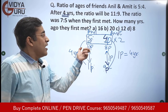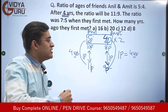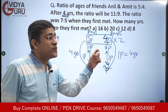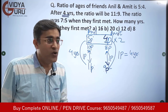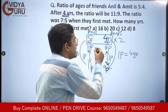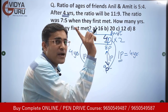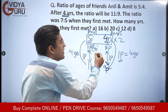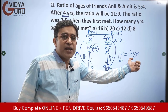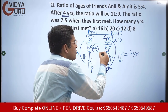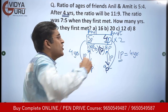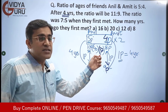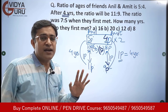Anil's current age is ten parts — ten into four equals forty years. Amit's current age is eight parts — eight fours are thirty-two. So the current ages are Anil at forty and Amit at thirty-two.